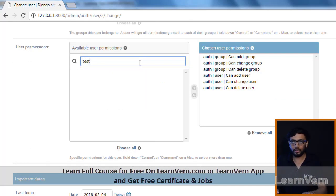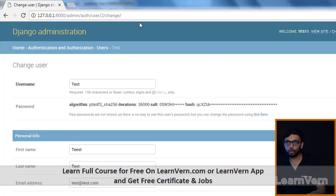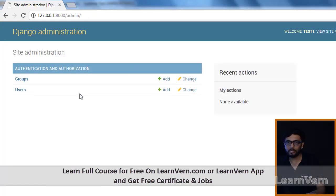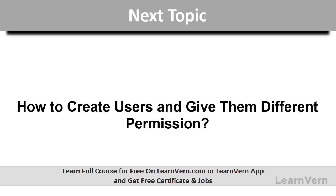So this is essentially the admin panel, where you can manage permissions, groups, and filters. In this lecture we have seen URL patterns and how to create our first template using Django. In the next lecture we'll see how to create users in the Django admin, give them different permissions, and how to use those user permissions.